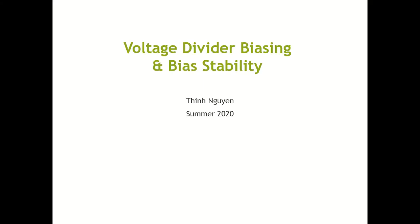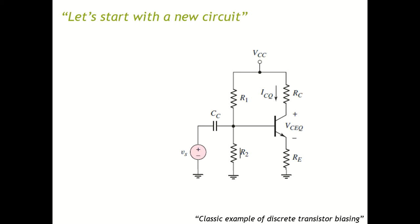Let's start with this circuit. This is a classic example of a discrete transistor biasing. In this circuit, it's basically a common emitter circuit because the ground goes to the emitter. However, we have a little bit of addition here.